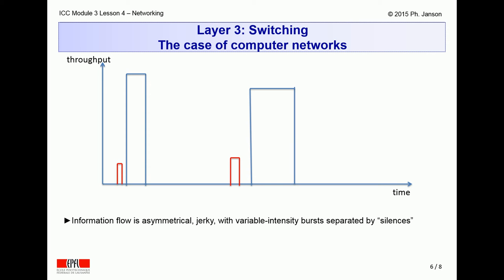The situation is quite different in computer communication because computer communication is very jerky, quite asymmetrical, and comes in bursts interspersed with potentially large silences. When a user sitting at her computer surfs the web, she typically types just a few characters at a time and then gets a load of information back from the server that she queried. Then there is silence until she has digested that and comes back with another query. Even when two computers communicate with one another, the amount of exchanged information can be very asymmetrical and jerky, and the sending and receiving of messages can be separated by eminently variable silences.